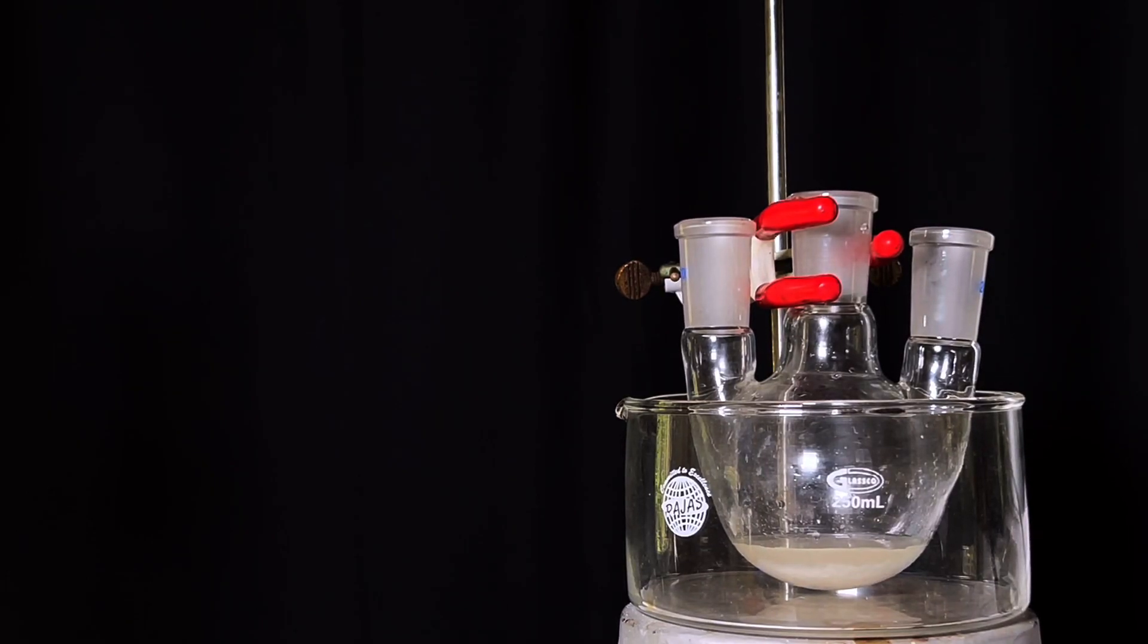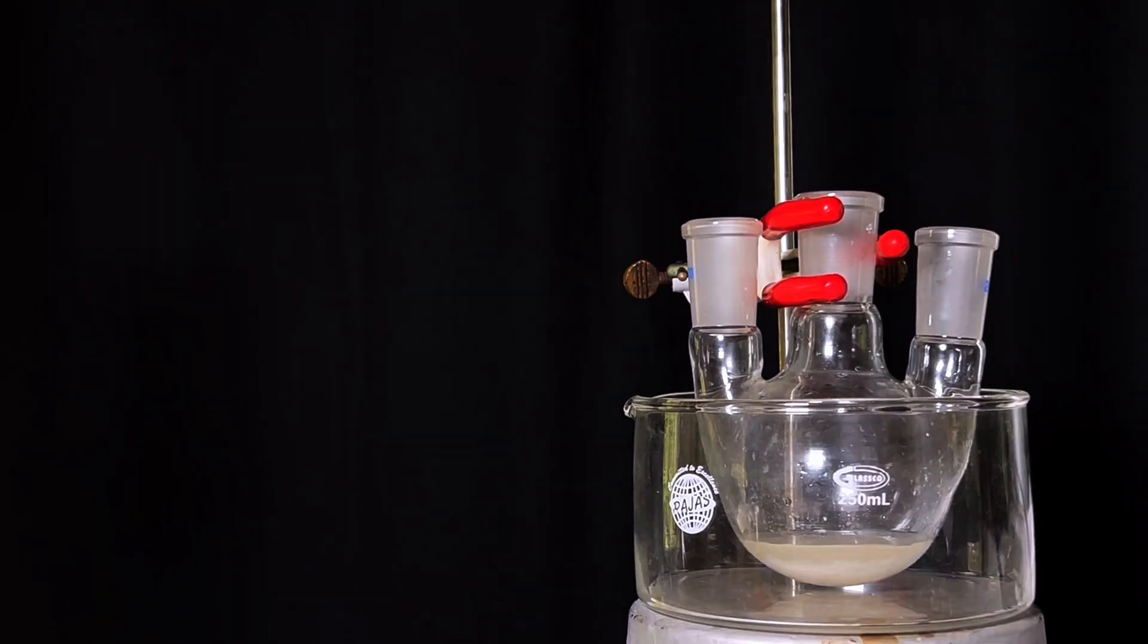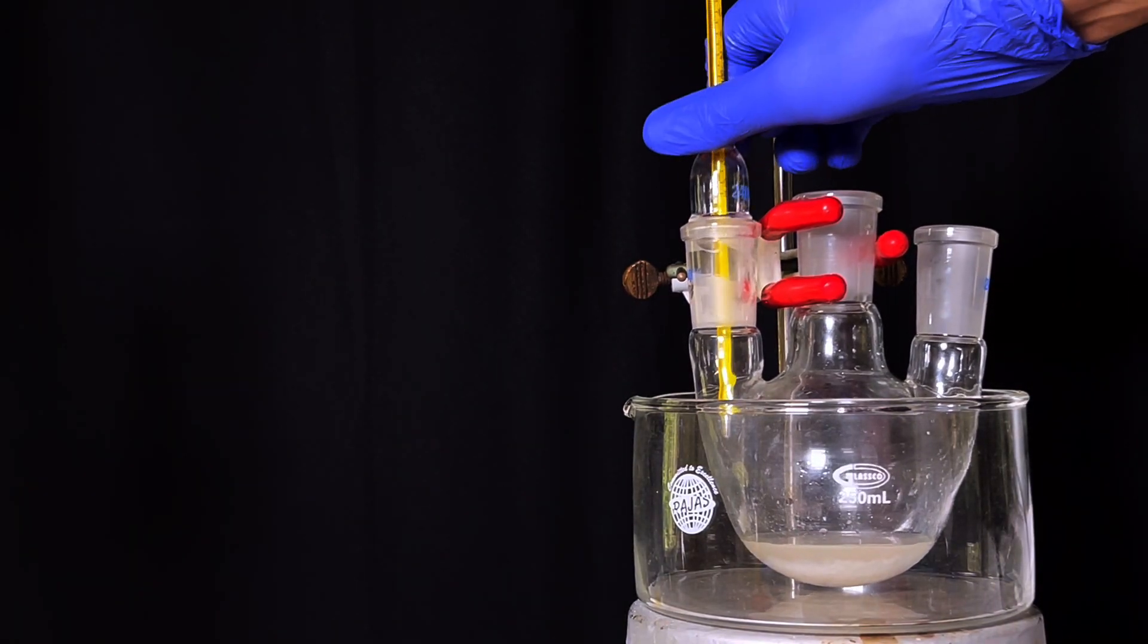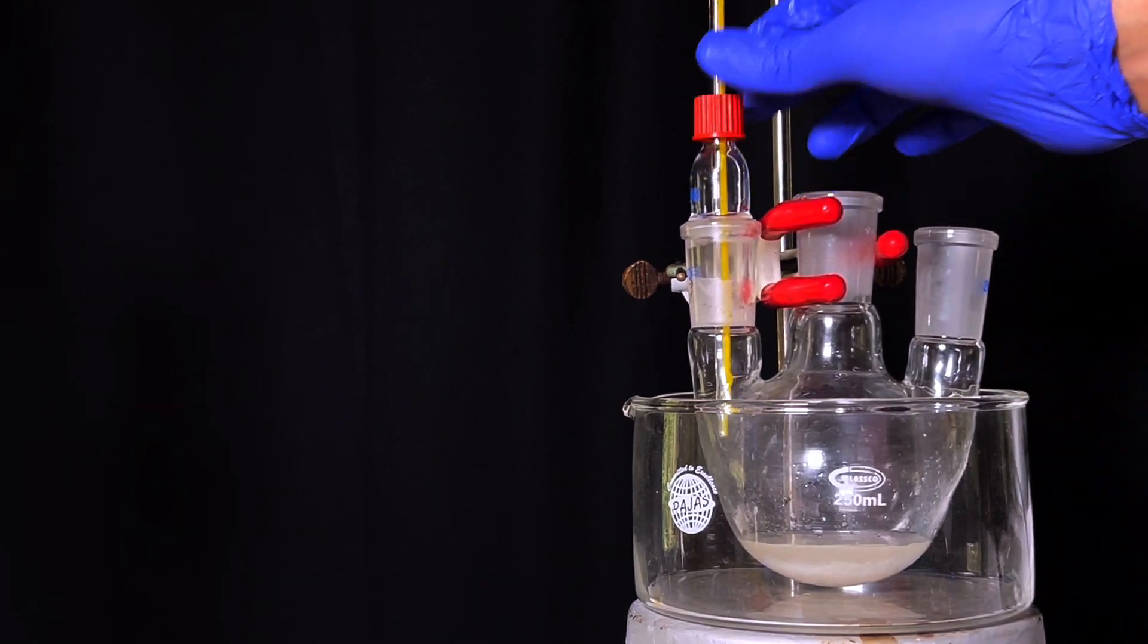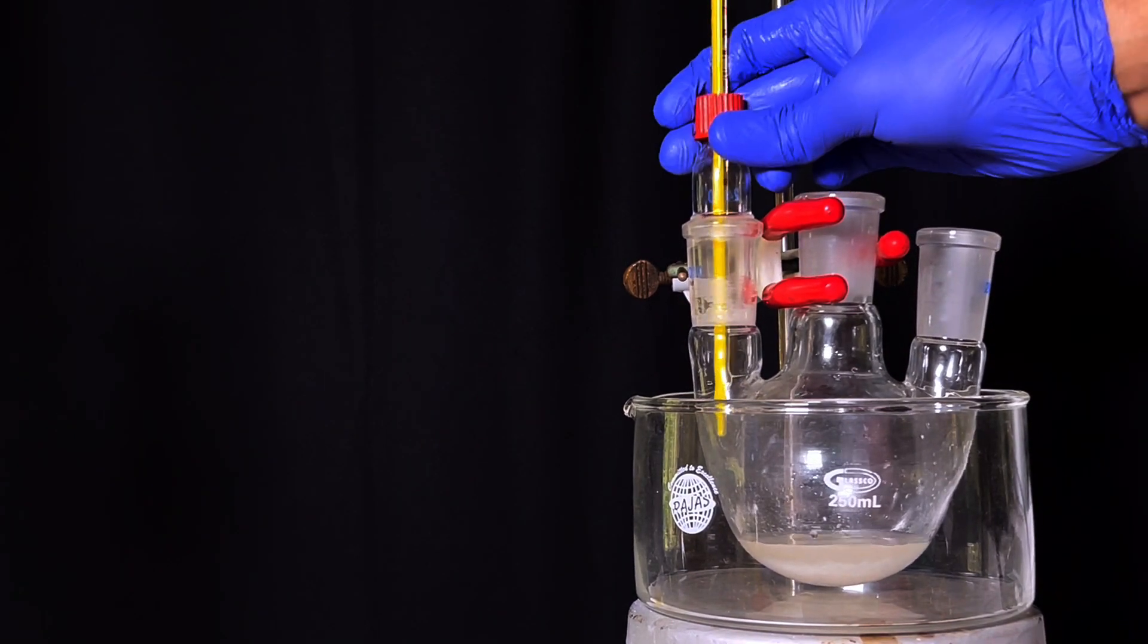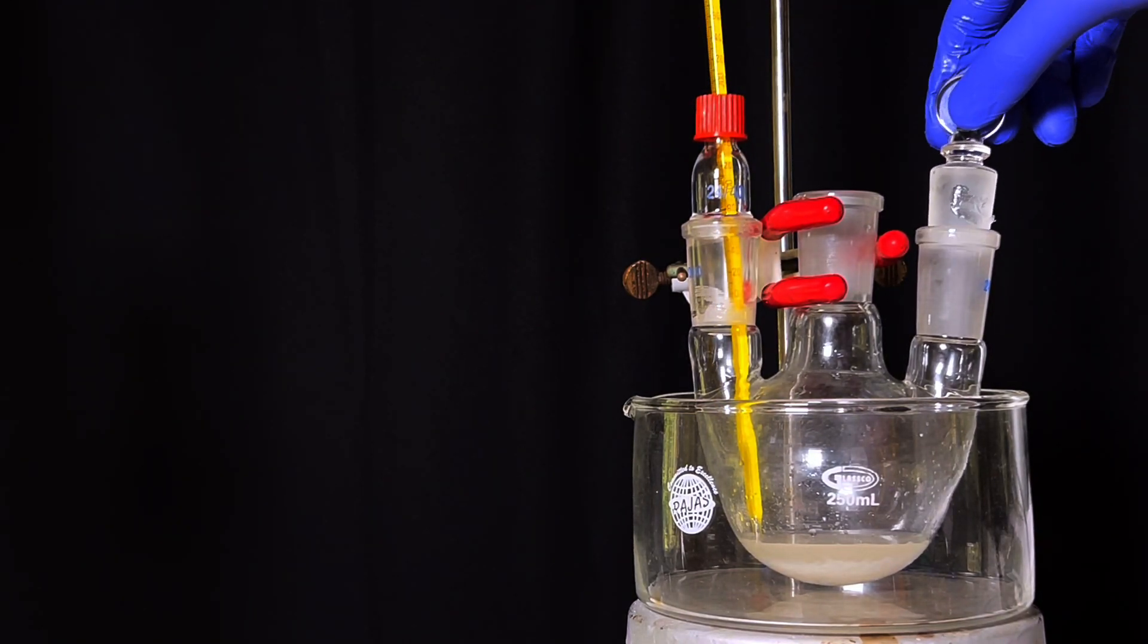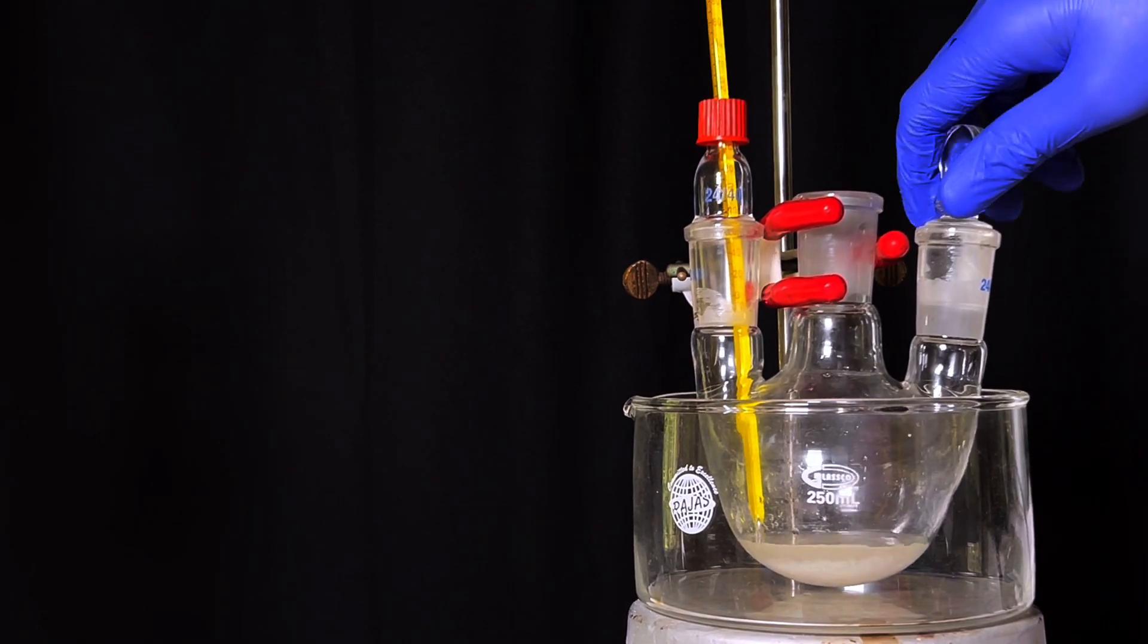The round bottom flask was placed inside a crystallizing dish. A thermometer adapter with a mercury thermometer was placed in one of the side necks. Silicon grease was used to provide an airtight seal. The other side was stoppered with a solid penny head stopper.